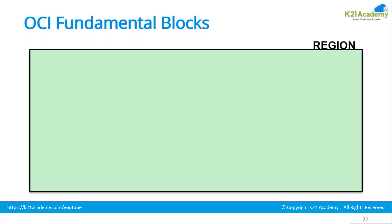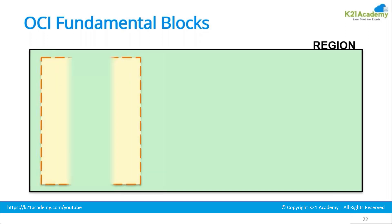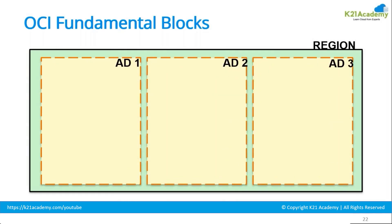If I take an example of India, India has got two data centers — one is in Mumbai and one is in Hyderabad — and both are two different regions. It doesn't depend upon the country; that is how the region has been defined. These regions are where Oracle is going to have their data centers, which are known as an availability domain.